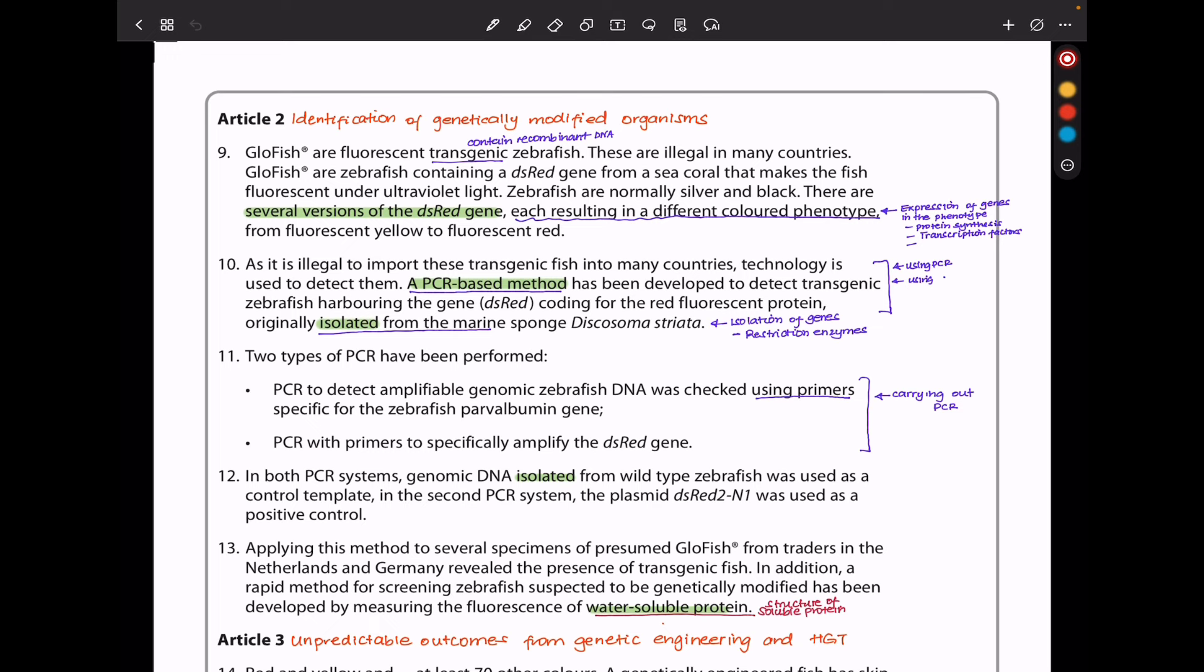The second article is about identification of genetically modified organisms. So for this one, it's not necessarily about horizontal gene transfer. It can be through genetic engineering that is intentional or done artificially.